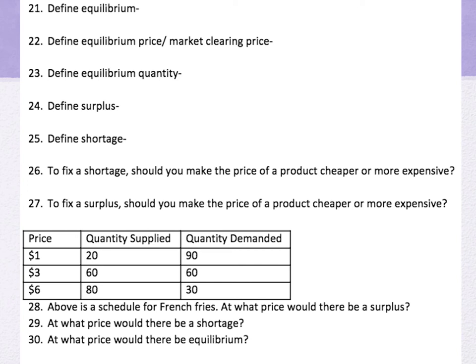We have a schedule with price, quantity supplied, and quantity demanded at one dollar, three dollars, and six dollars. Number 28: the surplus happens at six dollars — at six dollars, 80 units are made but only about 30 people are willing to pay that for french fries. Number 29: the shortage happens at one dollar — 90 people want french fries at a dollar but only 20 units will be supplied. Number 30: the equilibrium is at three dollars — about 60 people will buy it and 60 units will be made.